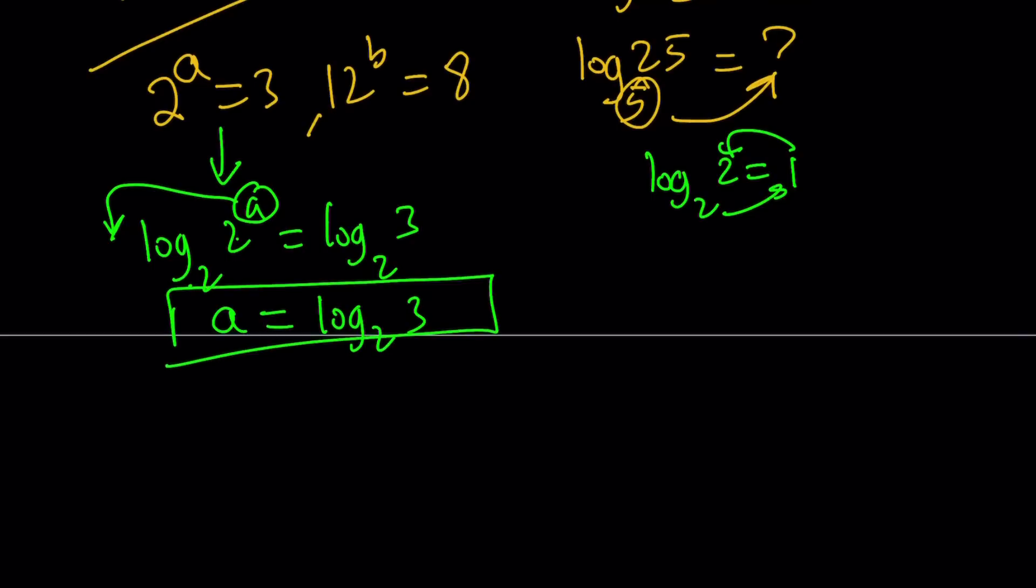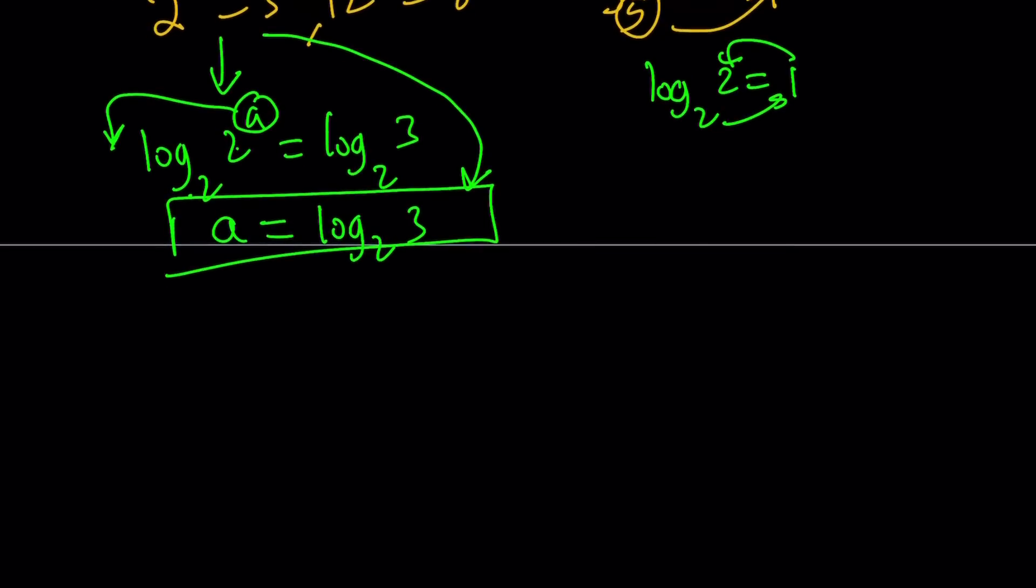If you're familiar with logs, you're going to be able to write this directly. As soon as you see 2 to the power of a equals 3, you can immediately say log 3 with base 2 is a because the log is looking for the exponent. Make sense? I hope so.